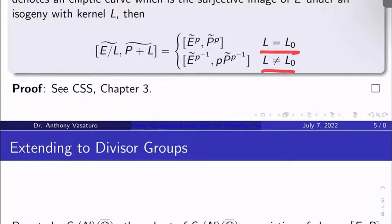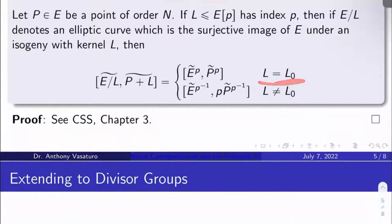If L is L₀, the kernel of the reduction map. Then this class I'm after turns out to just be the class of what you do is you reduce E, you act on it with Frobenius, and you reduce P and you act on that reduction with Frobenius. It's very simple in that case.